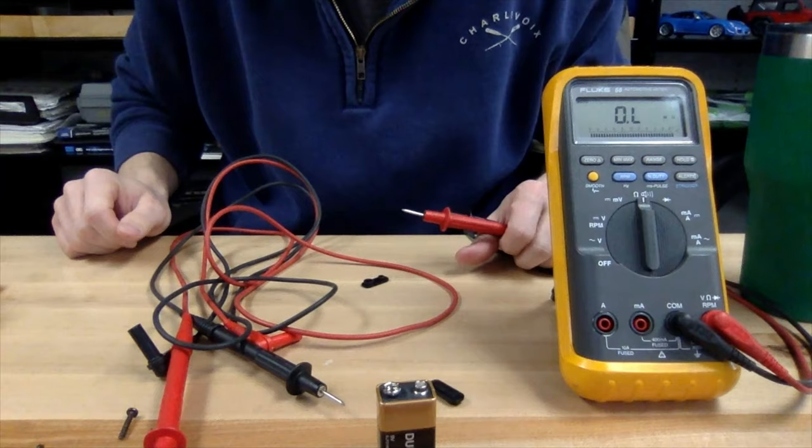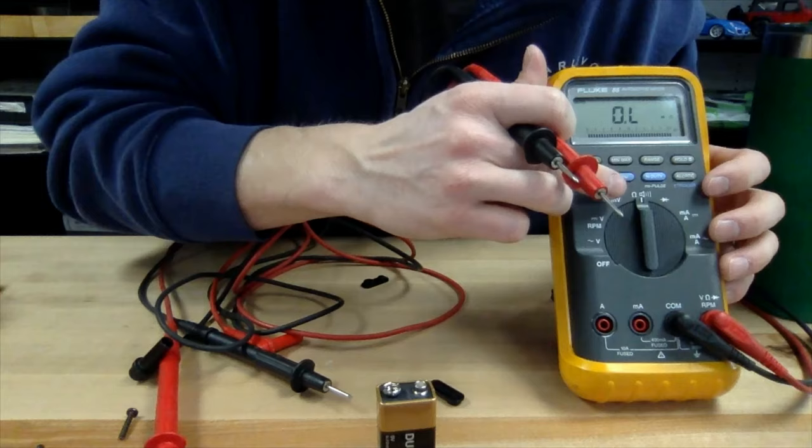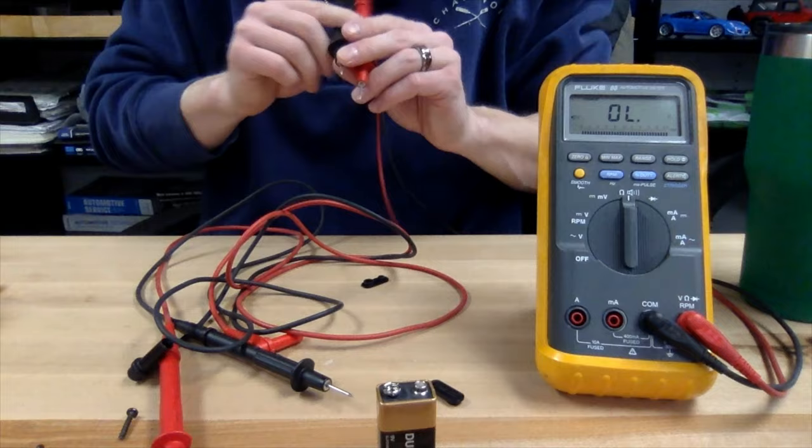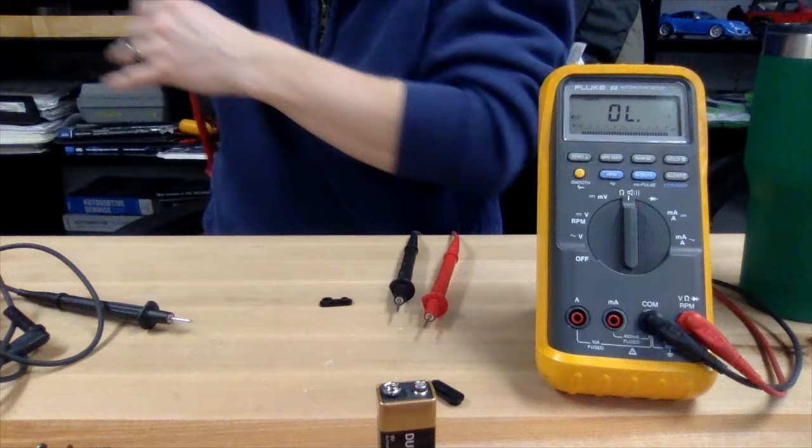So we're going to check out our test leads using the resistance setting or the ohm setting. There's a speaker on that setting, and essentially what I'm doing here is checking for continuity. If there's a complete path from point A to point B, the speaker will beep. We'll check both leads to make sure that both are working properly.